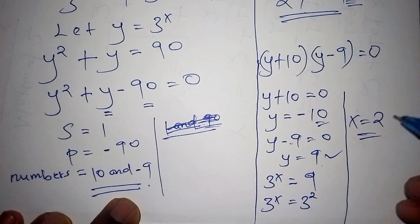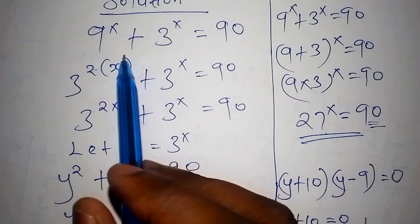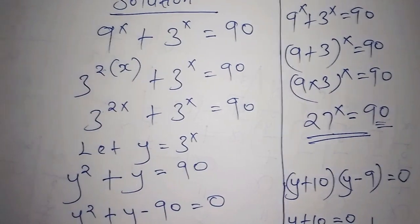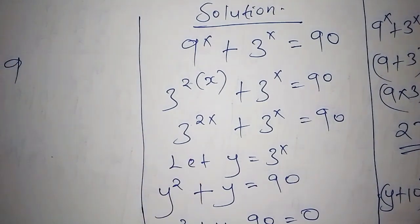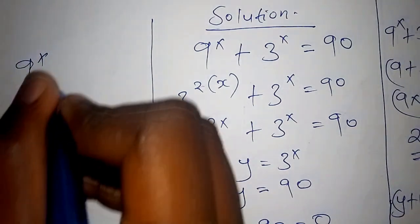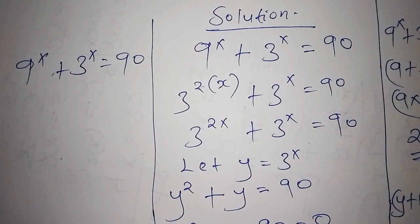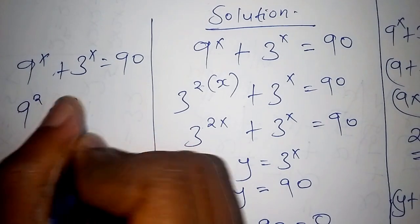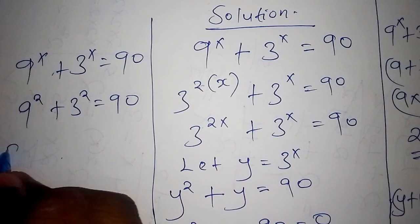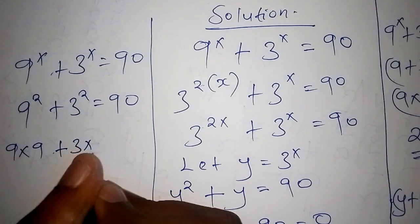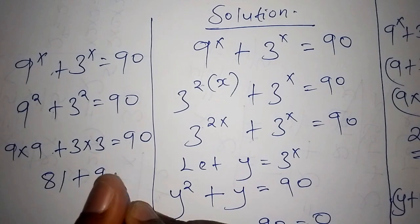Since the bases are equal, we equate the exponents: x equals 2. Our original problem was 9 to the power of x plus 3 to the power of x equals 90. Let's confirm: substituting x equals 2 gives 9 to the power of 2 plus 3 to the power of 2, which is 9 times 9 plus 3 times 3, giving 81 plus 9.